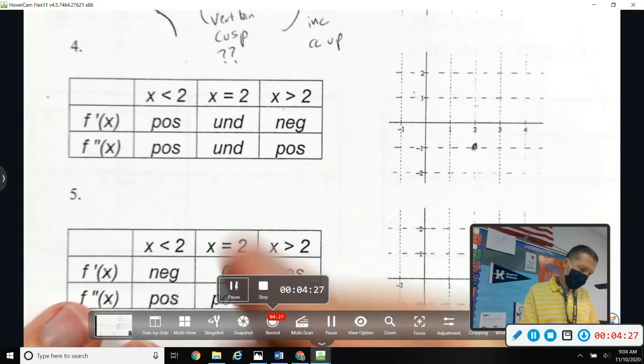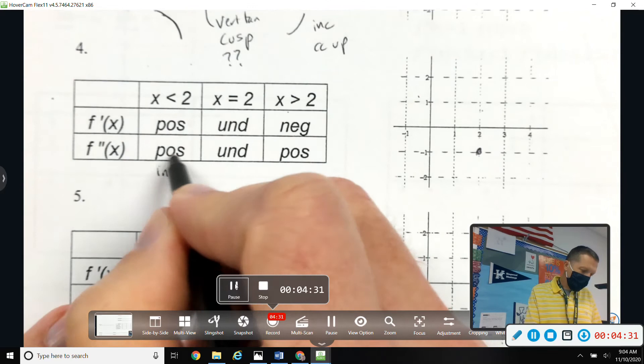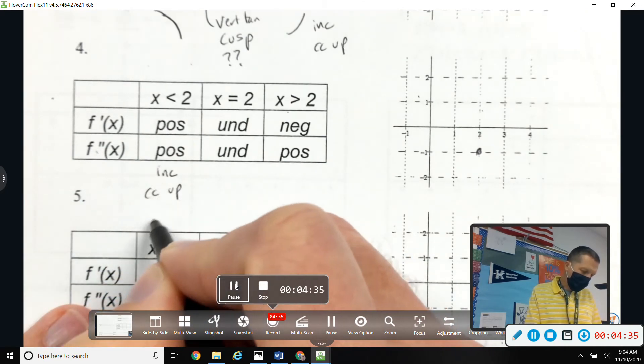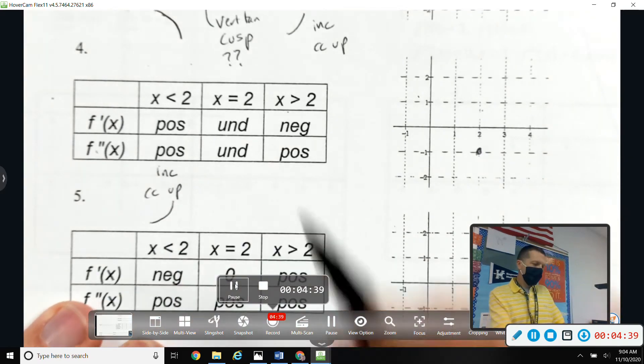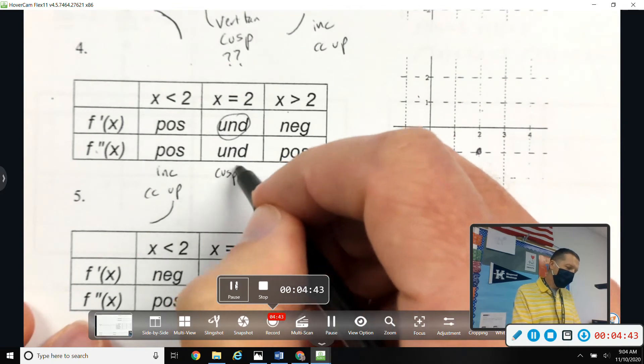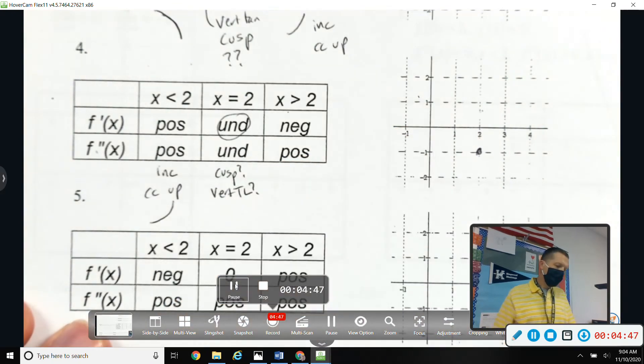Questions on that one? Number 4: f prime positive, double prime positive - increasing concave up.